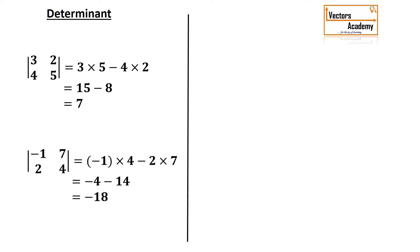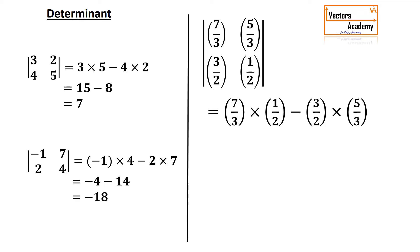We will have a look at a little more complicated example which involves fractions. 7 by 3, 5 by 3, 3 by 2 and 1 by 2. So 7 by 3 into 1 by 2 minus 3 by 2 into 5 by 3. Remember when we need to multiply the fractions we need to multiply the numerator with the numerator and the denominator with the denominator. So 7 into 1 will give you 7 and 3 into 2 will give you 6 minus 15 upon 6.